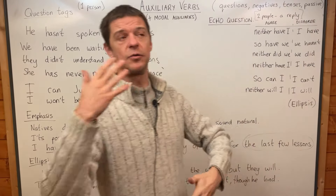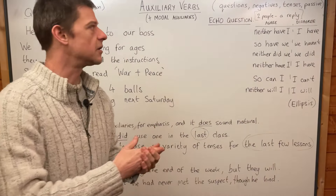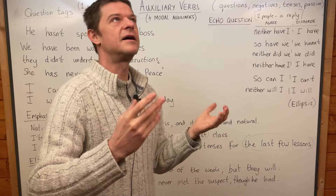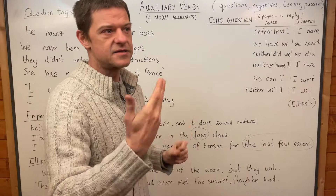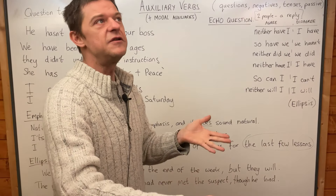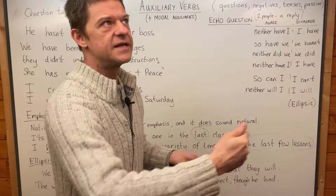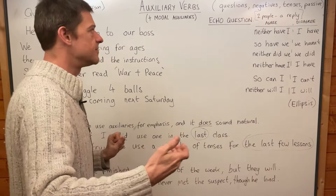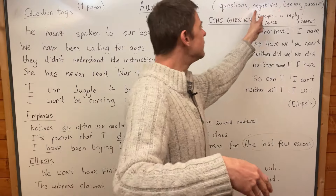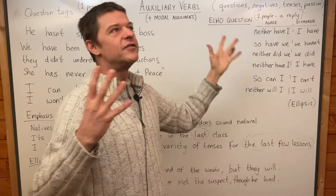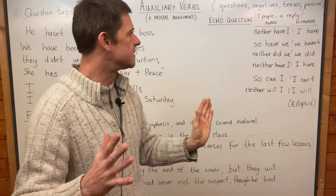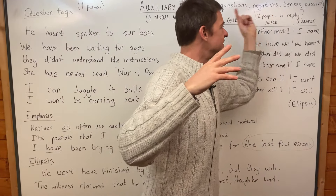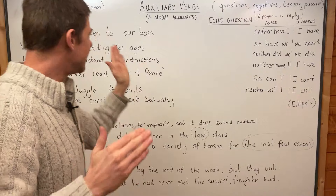We also use auxiliary verbs in passive voice — we'll cover passive in a future class. For example, 'I kicked the ball' is active, but 'The ball was kicked' — 'was' is an auxiliary verb making it passive: 'The ball was kicked by me.' So you can see we use auxiliary verbs in almost every sentence we utter.